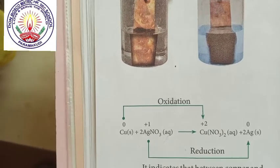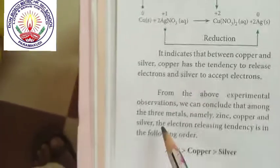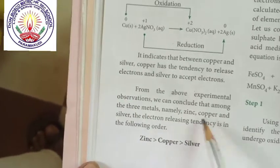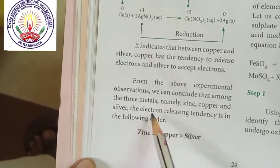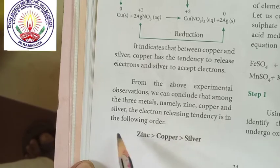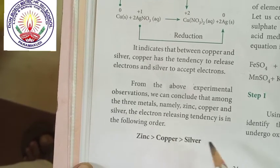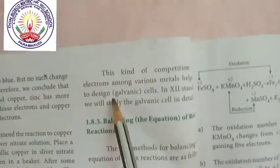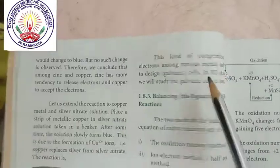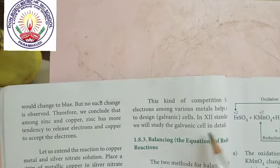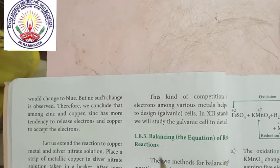From the above experimental observations, we can conclude that among the three metals — namely zinc, copper, and silver — the electron-releasing tendency is in the following order: zinc is highest, copper is less, and silver is lowest. This kind of competition for electrons among various metals helps us understand galvanic cells, which we shall study in detail in 12th standard.